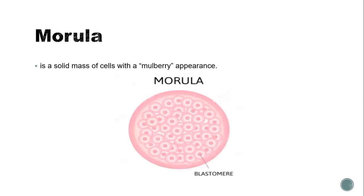After a series of mitotic divisions, the single-cell zygote is converted into a solid ball of cells called a morula, having cells with a mulberry appearance. Mitosis is very rapid during early cleavage — for instance, a frog divides into 37,000 cells in less than two days. No growth occurs in the individual cells, so the blastomeres become progressively smaller.